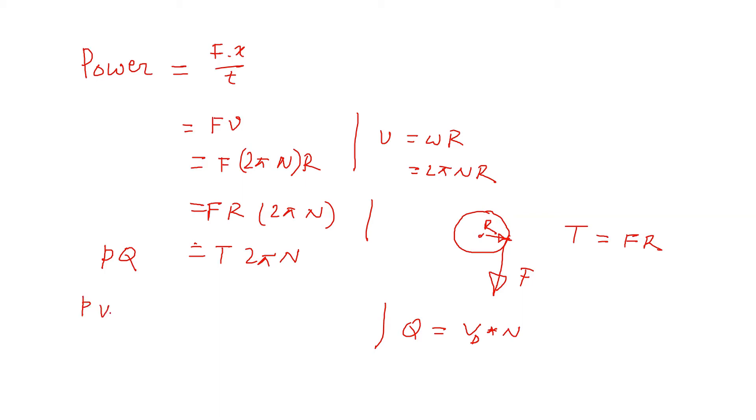So you can write P*Vd. For Q we can write Vd times n, which is equal to T times 2π times n. N cancels out from both sides, so we can solve for T.